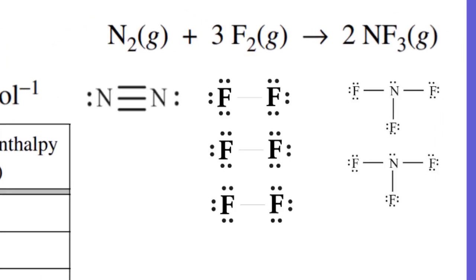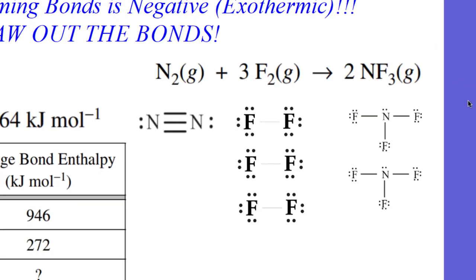So the first thing we're going to do is draw the bonds. We have a triple bond for the nitrogen gas. We got single bonds, three single bonds for the fluorine gas, and then our NF3 is going to be a trigonal pyramidal shape. There's two of these molecules, and there's going to be six bonds.